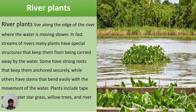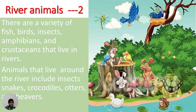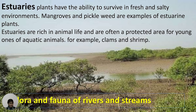River plants include tape grass, water stargrass, willow trees, and bridge trees. River animals in fast-moving water have suction-cup-like structures on their bodies to hold onto rocks. Rivers are home to fish, birds, insects, amphibians, crustaceans, snakes, crocodiles, and beavers. Estuary plants can survive in both fresh and salty environments — mangroves and pickle weed are examples. Estuaries are rich in animal life, often serving as protected areas for young aquatic animals such as clams and shrimps.